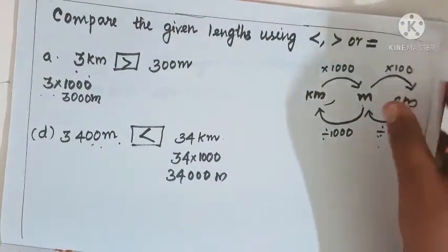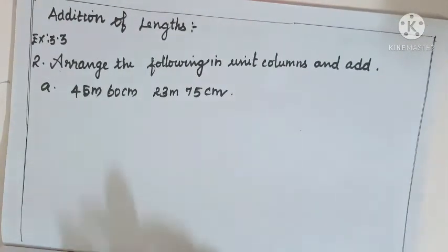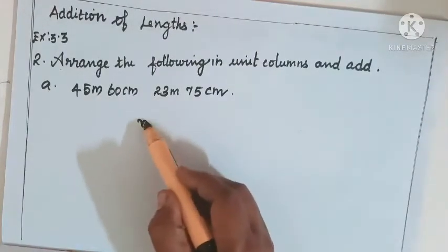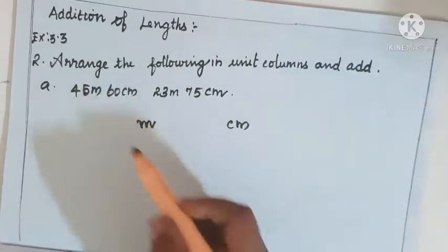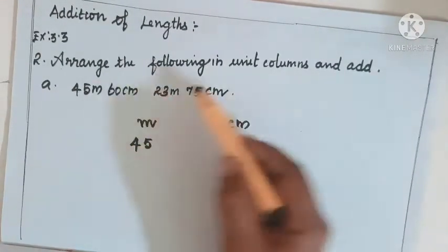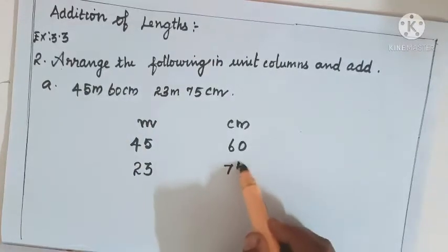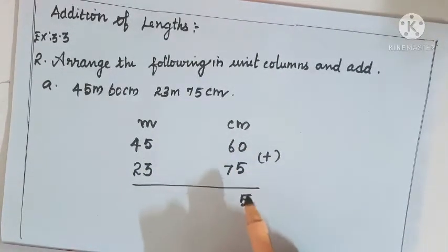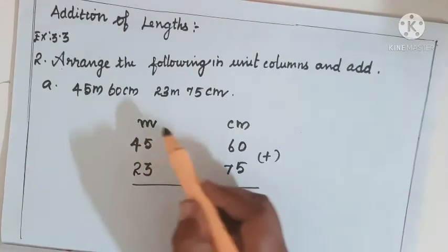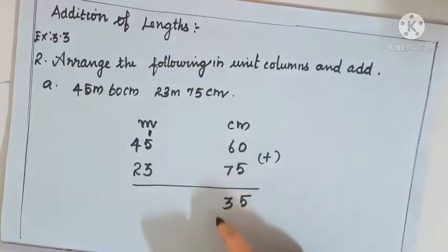Now we go to addition of lengths. Exercise 3.3: arrange the following in unit columns and add. First you arrange the meter and centimeter columns. The meter part you write on this side, centimeter part on this side. Meter is 45, centimeter is 60. Then 23 meter, 75 centimeter. Now add: 0 plus 5 is 5, 6 plus 7 is 13 — write 3, carry 1.